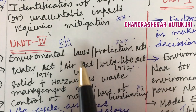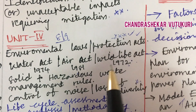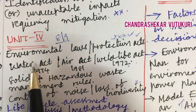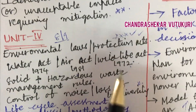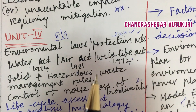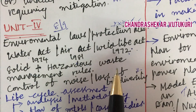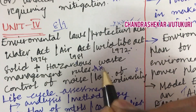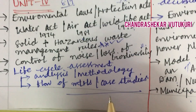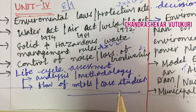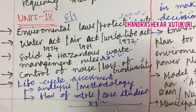Unit 4 covers questions 8 and 9, focusing on environmental laws and protection acts — the Water Act, Air Act, and Wildlife Act are top questions. If you work on these, you will be able to answer short questions as well. Write answers only in point-wise format and use pencil for neat sketches. Solid and hazardous waste management rules, control of noise, loss of biodiversity, life cycle assessment analysis, methodology, flow of materials, and case studies will also be asked in questions 8 and 9.